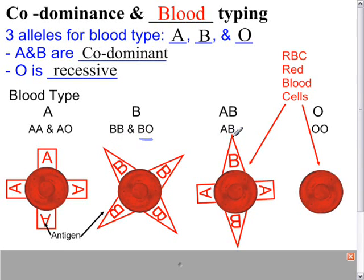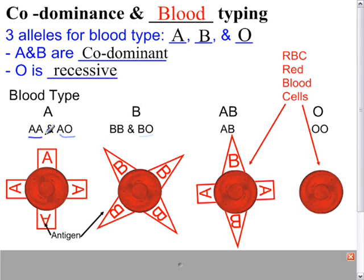There is only one genotype for type AB: having both alleles, one A and one B. Everybody has two copies of every gene because you get one from your mom and one from your dad. For type O, that means you have both recessive O's — both of your genes lack an antigen — and you have type O.